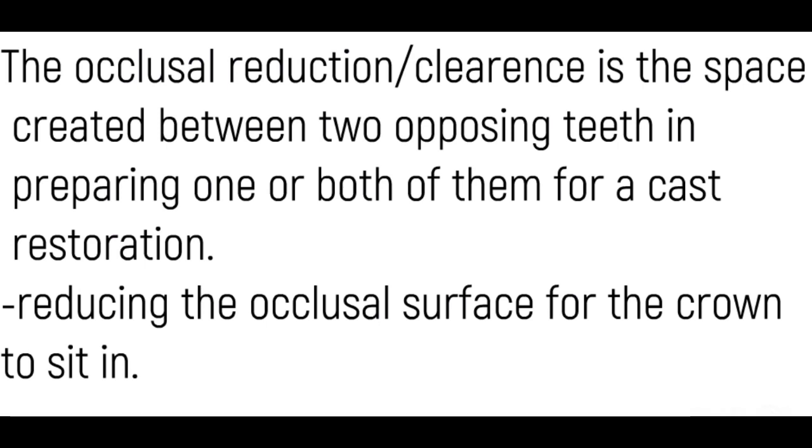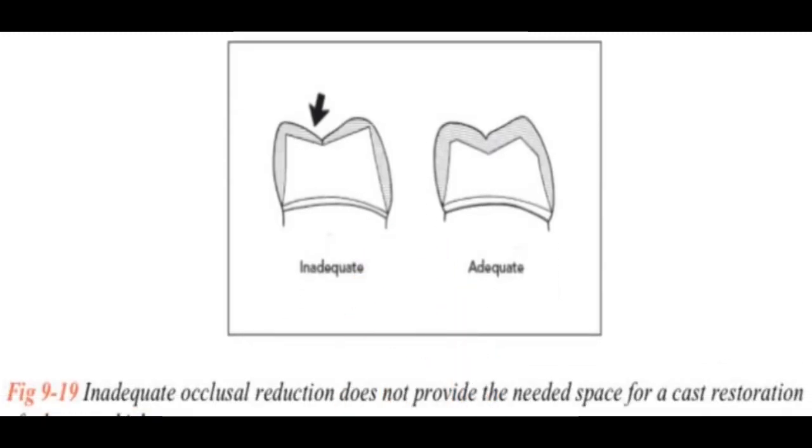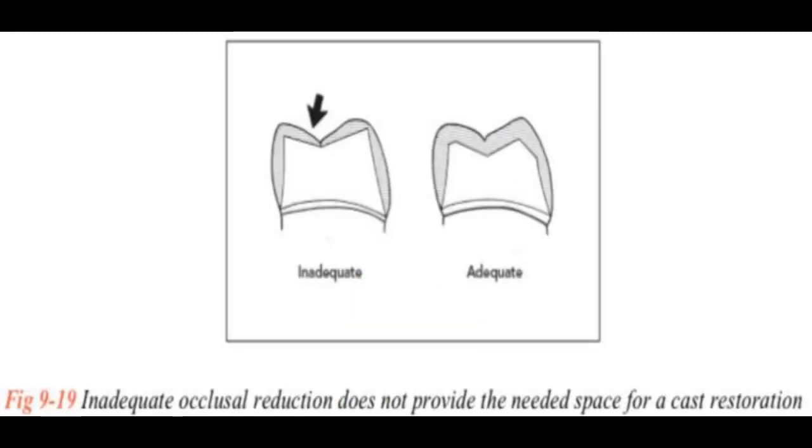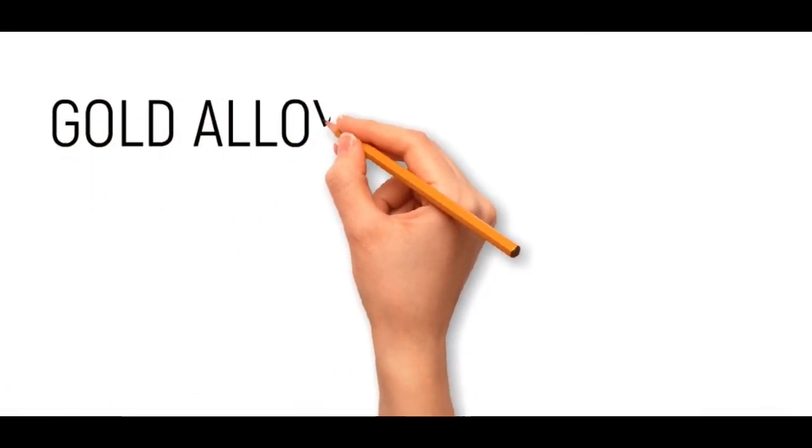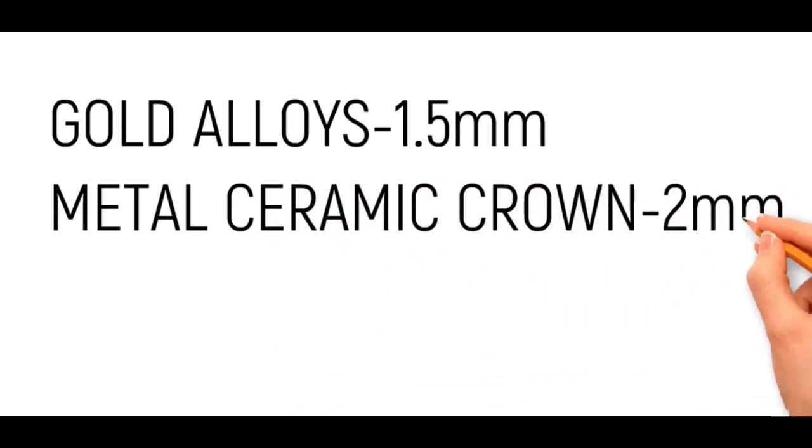Here in this figure you can appreciate how an inadequate occlusal reduction is not providing the needed space for the crown to sit in, while on the opposite extreme you can see how well the tooth is prepared and how well is the strength and retention of this restoration due to adequate occlusal reduction. The occlusal reduction values for gold alloy is 1.5 millimeter, metal ceramic crown is 2 millimeter, and all ceramic crown is 2 millimeter.